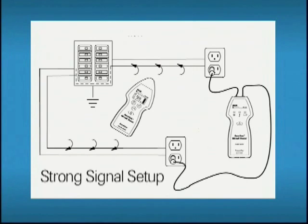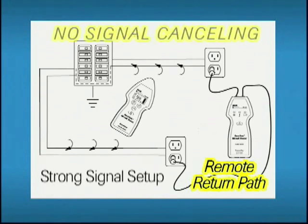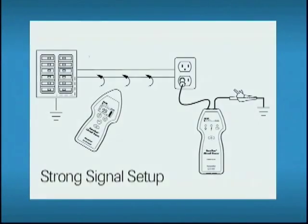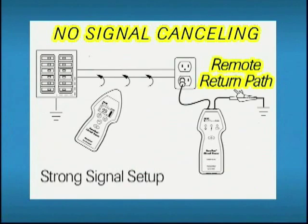To avoid this cancelling effect, one lead of the transmitter should be connected to the conductor to be traced, while the second lead should be connected to a remote return path. The simplest method is to use the 25-foot test lead to connect to a neutral or ground from another circuit, or connect to a ground source such as a water pipe or ground rod.